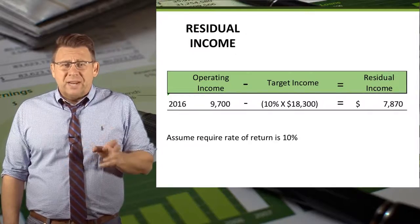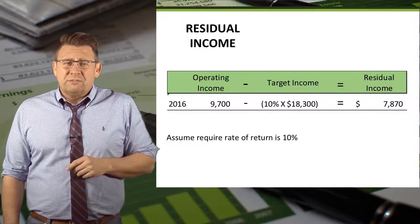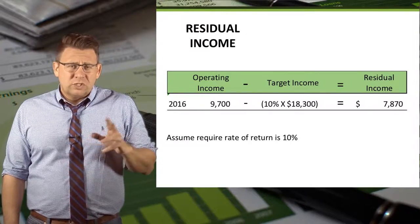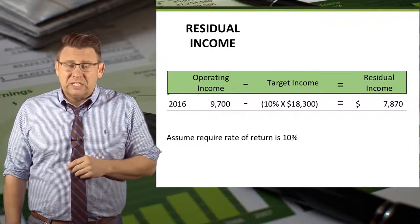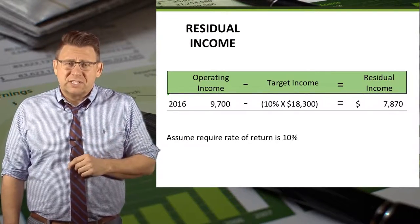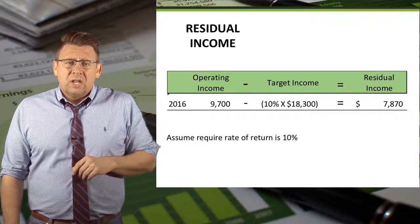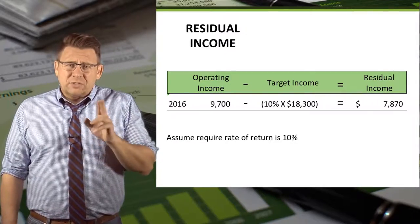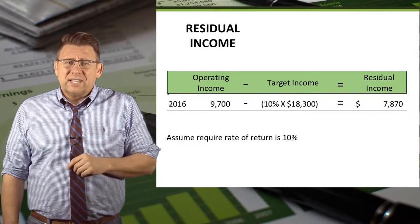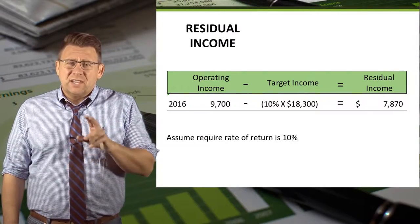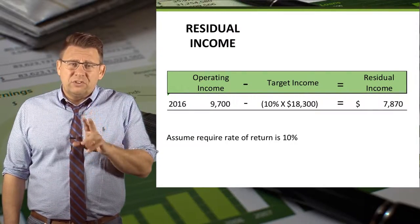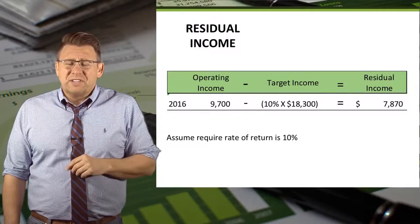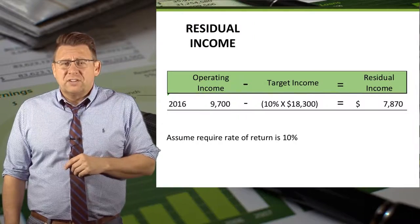For 2016, operating income minus the target rate of return — which I have assumed to be 10% in this example — times the total assets gives us a residual income of $7,870.